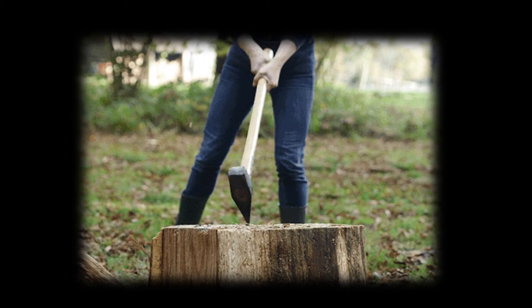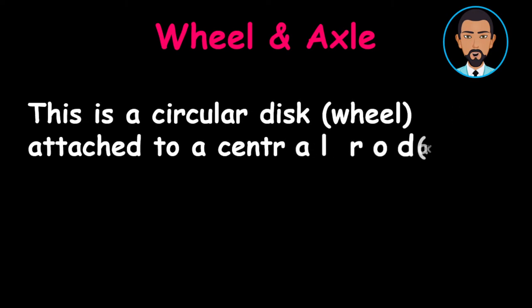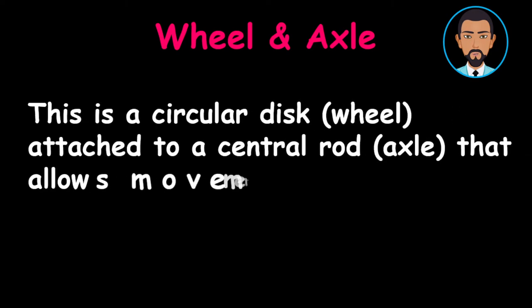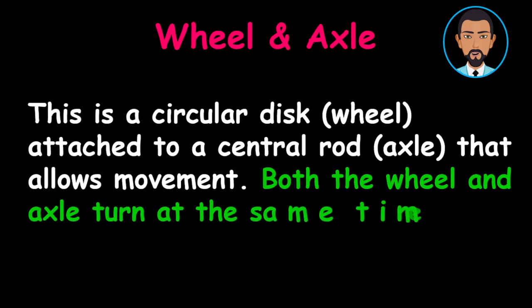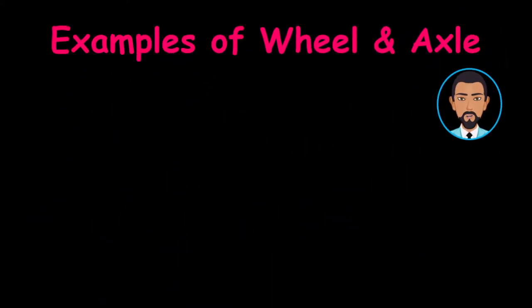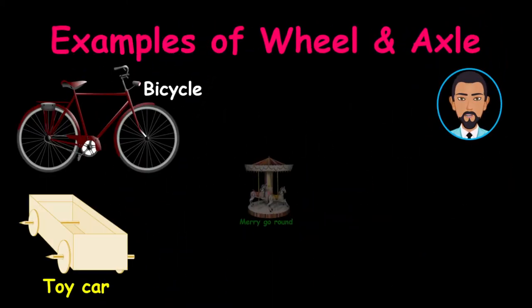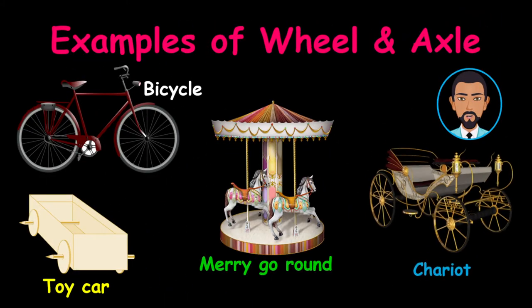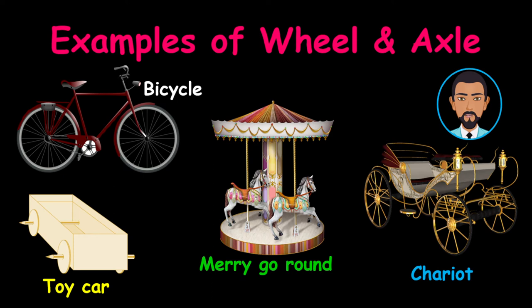Now it's time to turn to wheel and axle. This group of simple machines really keeps us moving. A wheel and axle is a circular disc called a wheel attached to a central rod called the axle that allows movement. Both the wheel and axle turn at the same time. Some examples of wheel and axle include bicycles, toy cars, merry-go-round, and even chariots. Look at those wheels go.